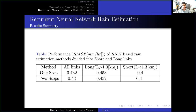In this table, we show the RMC of the RNN-based method, where the left column shows the result on all links, the center column shows the result on long links, and the right column shows the result on short links. Moreover, we show this using two networks: one-step and two-step. From this table, we can see that short links and long links show similar results when using RNN methods.